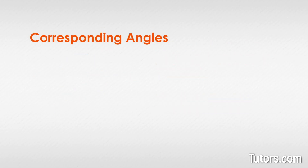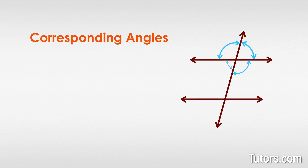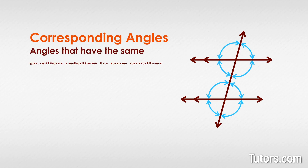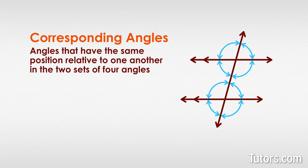Now let's discuss corresponding angles. Anytime a transversal crosses two other lines, we get corresponding angles. The more restrictive our intersecting lines get, the more restrictive are the angle relationships. When a transversal line crosses two parallel lines, a whole new level of angle relationships opens. From this figure, we can pull angles that look like each other — angles that have the same position relative to one another in the two sets of four angles: four at the top on line A-R, and four at the bottom on line T-O. These are corresponding angles.